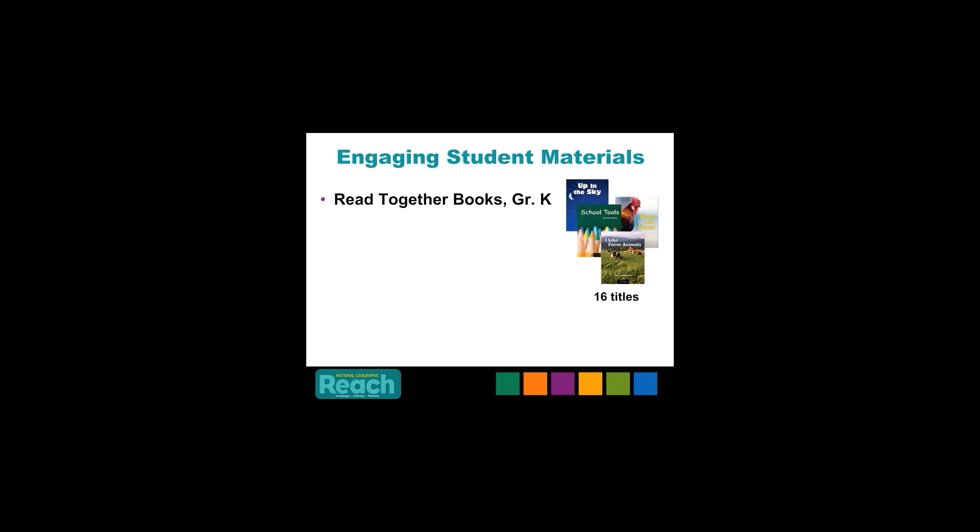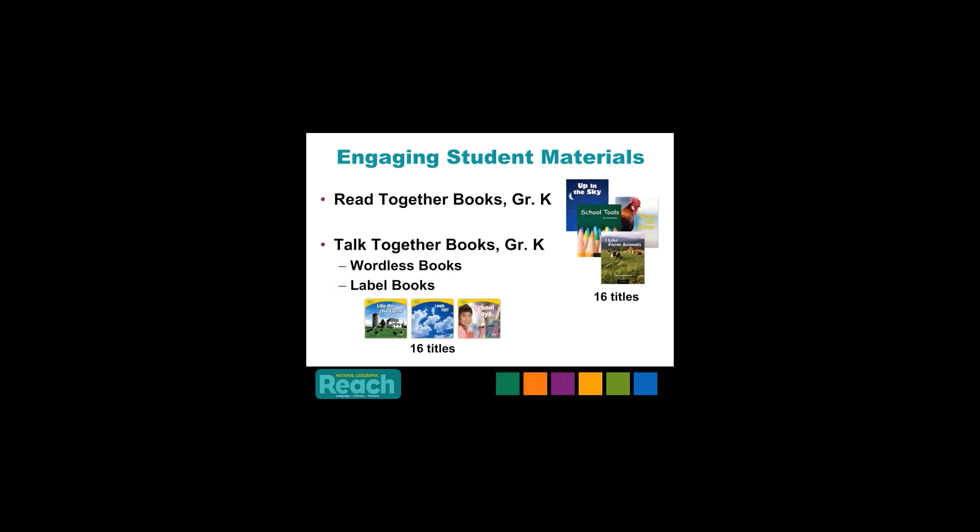For the kindergarten level, students receive 16 titles — 2 per unit — of the Read Together books, and 16 titles — 2 per unit — of the Talk Together books, including wordless and label books. All of these student materials across all grades K-5 contain rich National Geographic content to support the language, literacy, and content instruction in Reach.